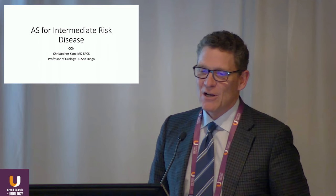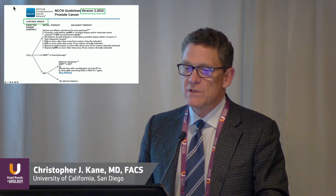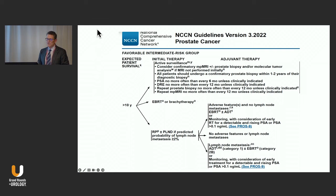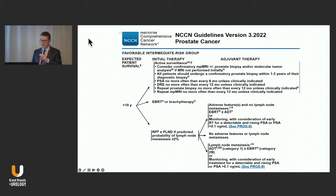Let's talk about intermediate risk disease. For low-risk disease, active surveillance is preferred. For favorable intermediate risk disease, it is an option and there are some favorable intermediate risk patients for whom it's probably reasonable. However, the majority of favorable intermediate risk patients by grade — which is the most common category — are not good candidates for active surveillance in my opinion.